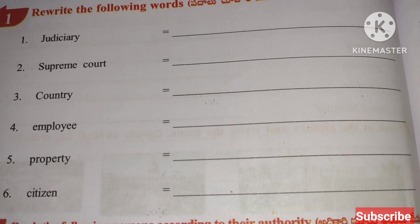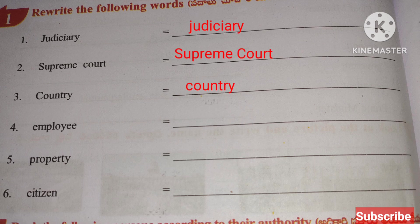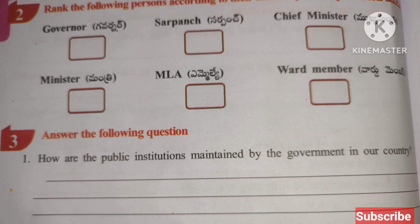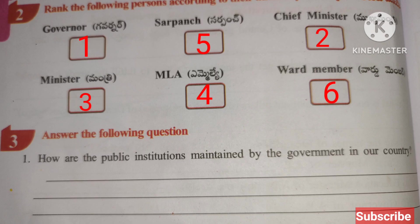Worksheet Five: Rewrite the following words — Judiciary, Supreme Court, country, employee, property, citizen. Rank the following persons according to their authority: one — Governor, two — Chief Minister, three — Minister, four — MLA, five — Sarpanch, six — Board Member.